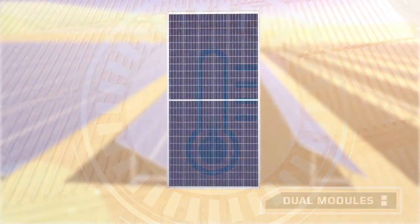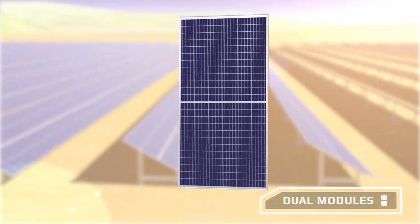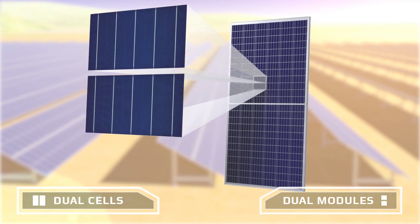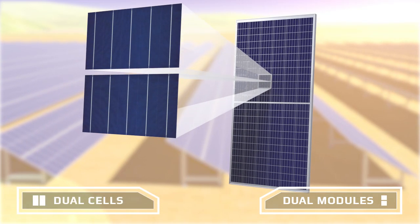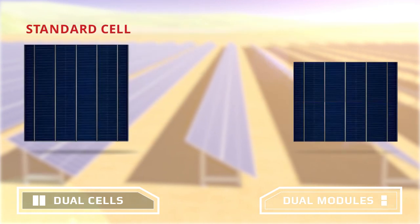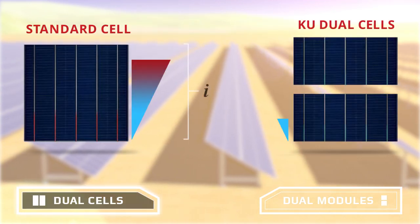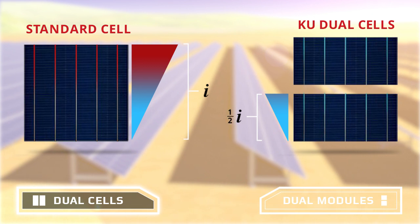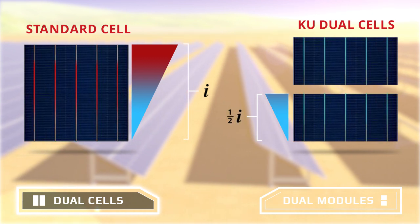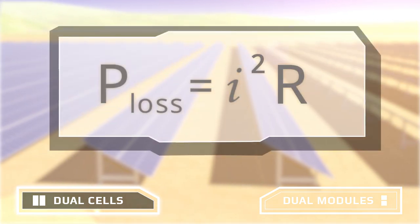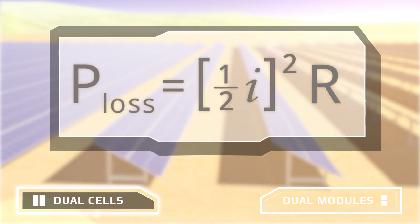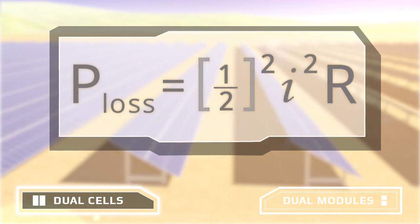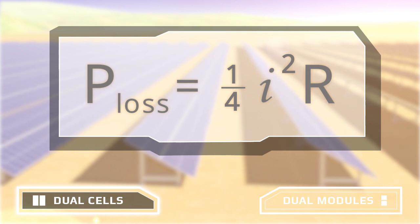The main differences between KOO modules and standard PV modules are dual cells and dual module design. Dual cells are half the width of standard cells. Cells with half the width generate half the current. Because the power loss goes as the square of the current, dual cells generate only one quarter of the power loss.